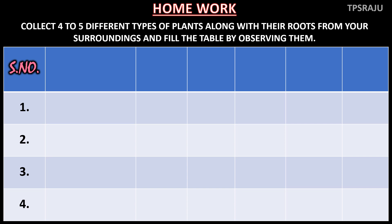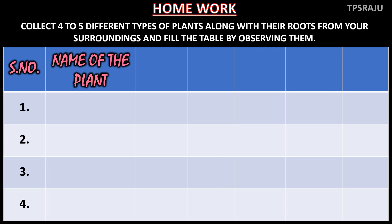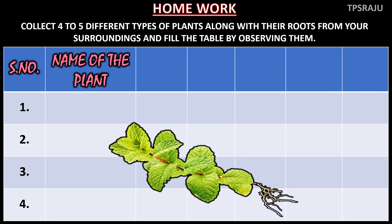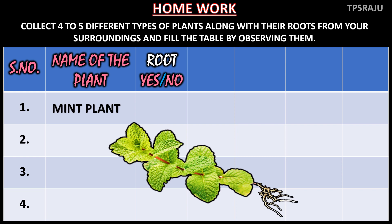The first column is serial number: 1, 2, 3, and 4. The second column is name of the plant. For example, I collected a mint plant, so I am writing mint plant in the first row. In the third column, root — yes or no. That means, if that plant has roots, we should write yes; if there are no roots, we should write no. Mint plant has roots, so I am writing yes.